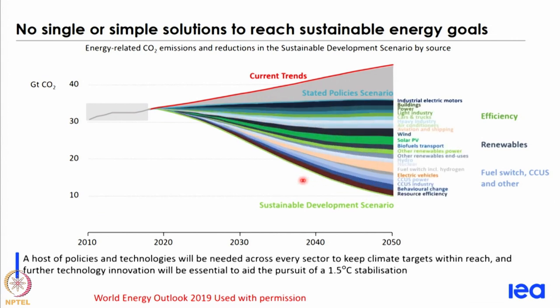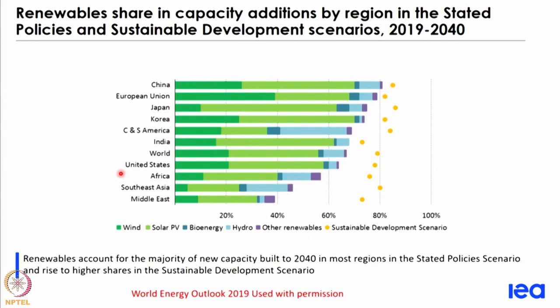This is now broken down into different sub-components. The IEA report gives details about how these could be achieved — a host of different policies and technologies that can be adopted in every sector to keep the climate targets within reach and to look at 1.5 degree stabilization. This is a time frame till 2050 where these options can help us reach sustainable energy goals, and it is not going to be just renewables or just efficiency — it is a whole combination of different things.